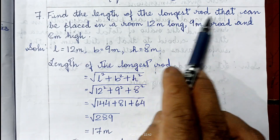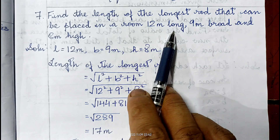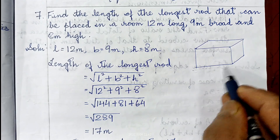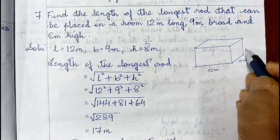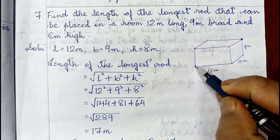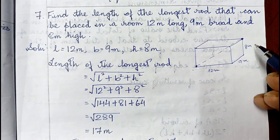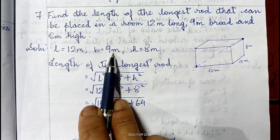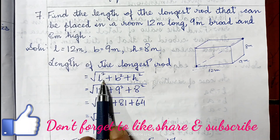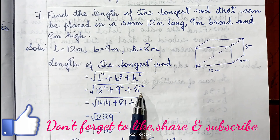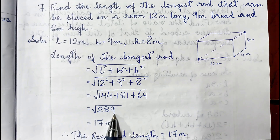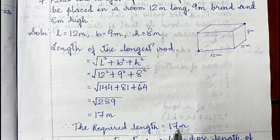Question 7: Find the length of the longest rod that can be placed in a room 12 m long, 9 m broad, and 8 m high. The longest rod fits along the space diagonal. Diagonal = √(L² + B² + H²) = √(144 + 81 + 64) = √289 = 17 m. Therefore the required length is 17 meters.